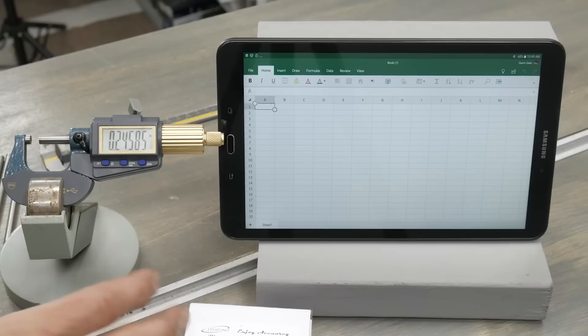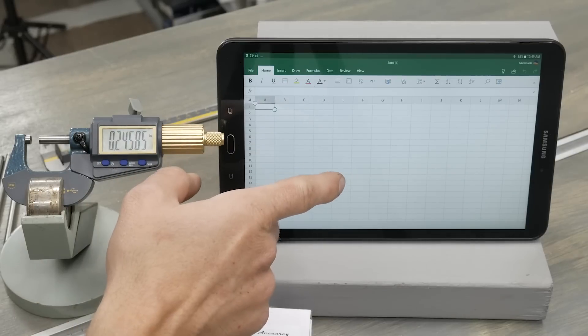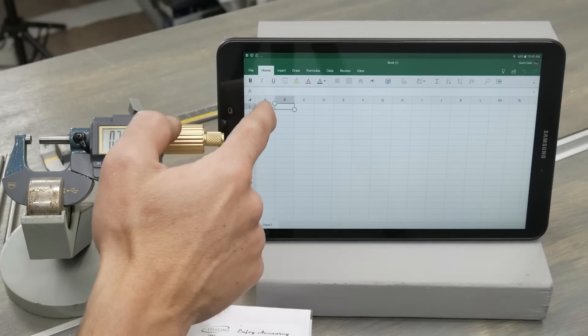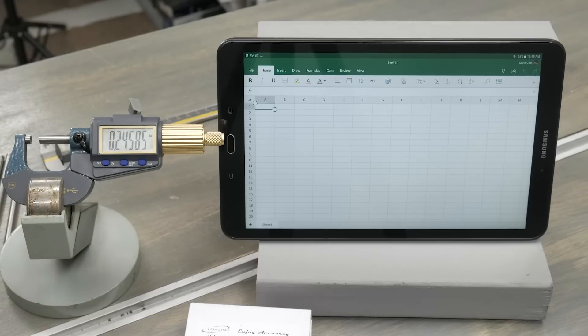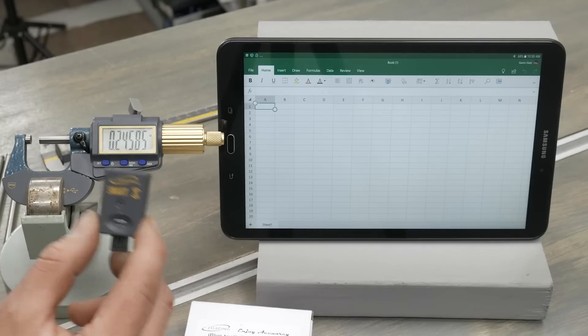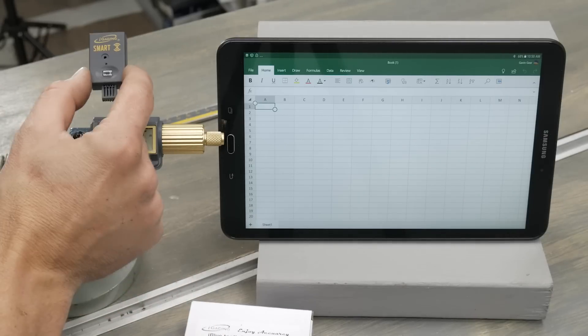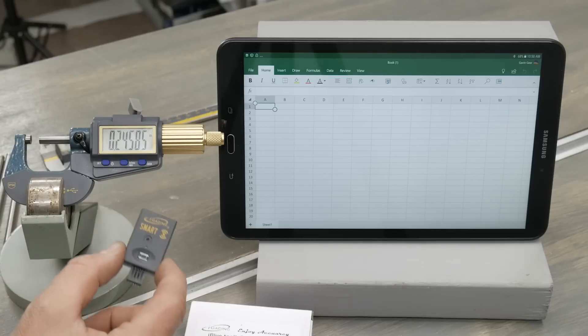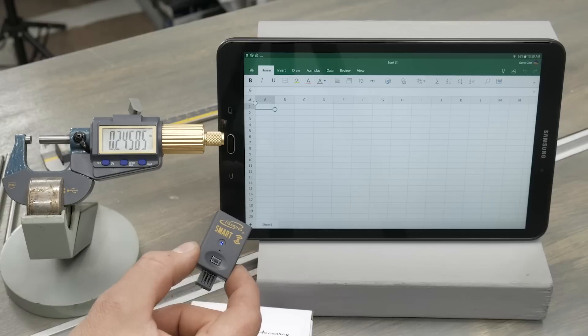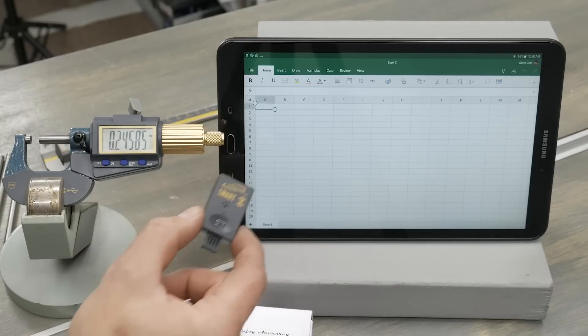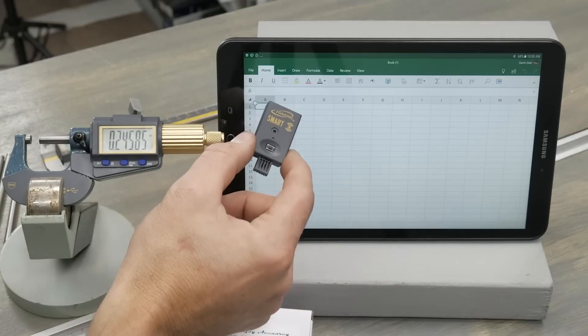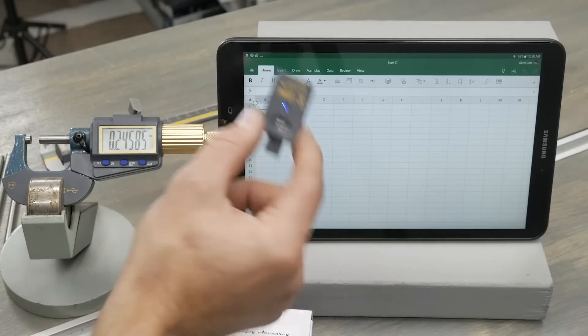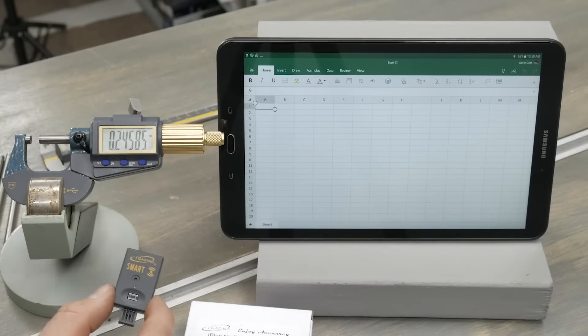Okay, for this data logging scenario, I've got a Samsung Galaxy Tab A. I've got Excel running here, and we've just got a cell highlighted. I've got the iGaging Smart Bluetooth Dongle, which is 35-BT-28. This is going to convert any iGaging instrument that has the appropriate data output port into a Bluetooth-connected device that pairs as a keyboard. So, you don't have to have special apps. It's going to type it in. It's going to hit enter, which for a spreadsheet program like Excel is going to be awesome.